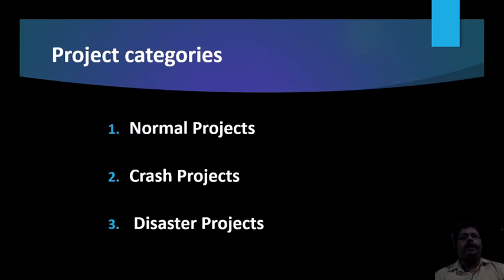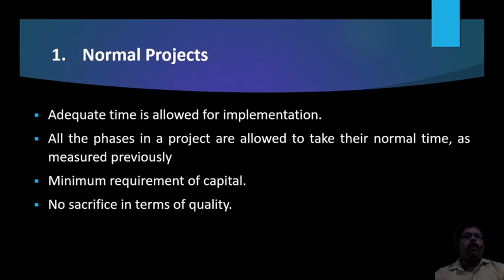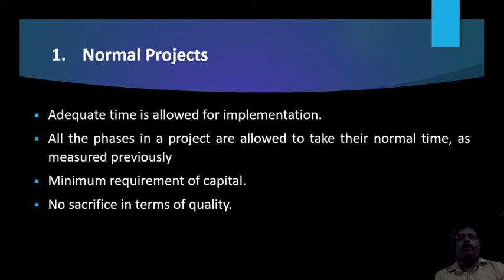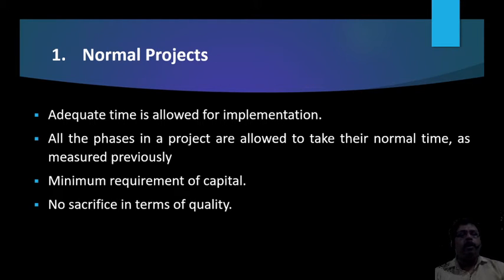Projects can be categorized as normal projects, cash projects, and disaster projects. In a normal project, adequate time is allowed for implementation — time limit is not a strict criteria, and if extra time is needed, it can be extended. All phases are allowed to take their normal time. Minimum capital requirement is maintained, and there are no sacrifices in terms of quality with respect to time duration or cost. Such projects are called normal projects.